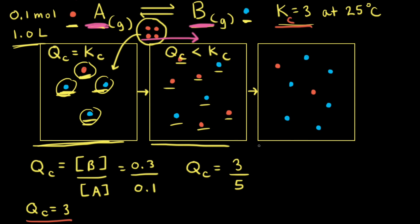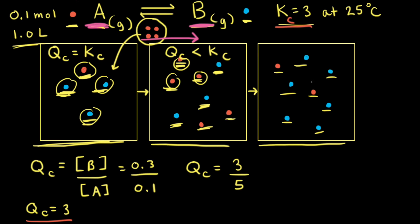The third particulate diagram shows what happens after the net reaction moves to the right. We decrease the amount of A and increase the amount of B — going from three blues in the second diagram to six blues in the third, and from five reds to only two reds. So three reds must have turned into blues. Calculating QC for the third diagram gives 6 divided by 2, which equals 3. So QC equals KC, and equilibrium has been reestablished.